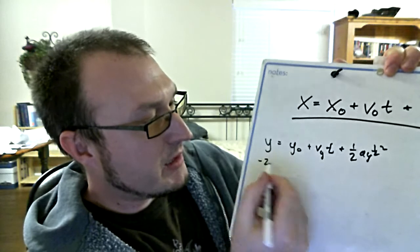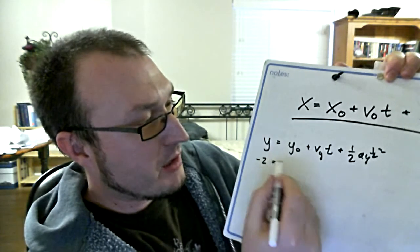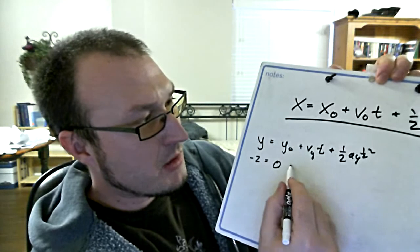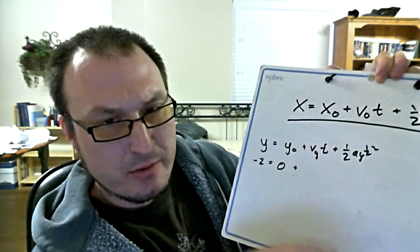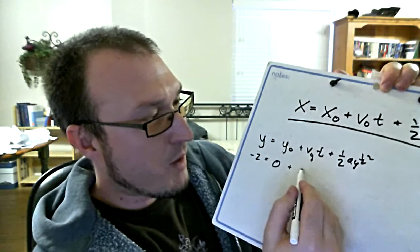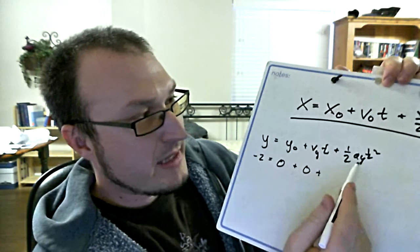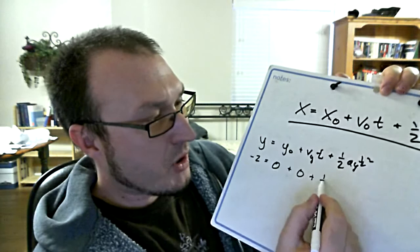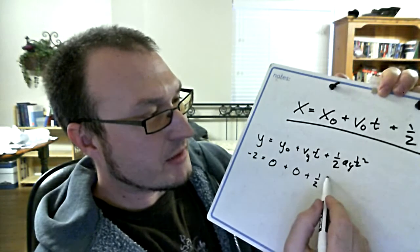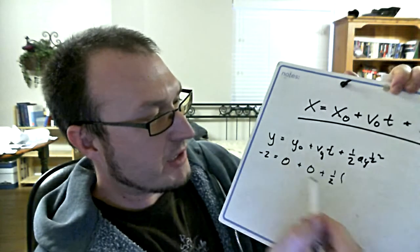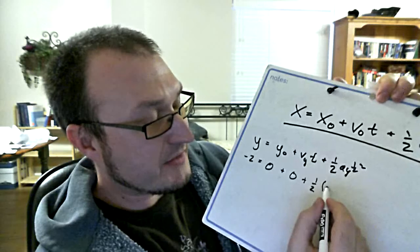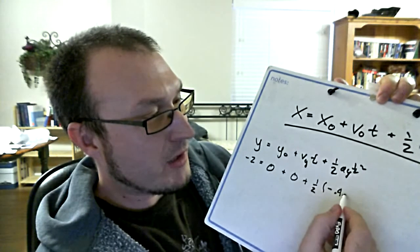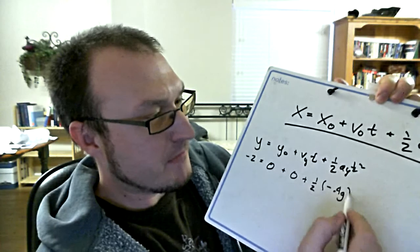We start substituting in here. The y that I want to get to is two below where I started. I'm going to say that I'm dropping the ball from my hand which is at zero, and I'm not throwing it up or down so I'm going to put the initial y velocity as zero. Then the acceleration that I want here is the acceleration on Mars, so it's going down in the same direction so I need a negative sign and it is 0.4g times t squared.